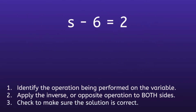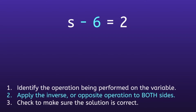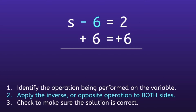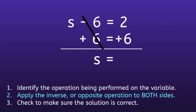Example Number 2: S minus 6 is equal to 2. We recognize our variable is S. Step 1: Identify the operation being performed on the variable. Looking at the side with the variable, the operation being performed is minus 6. Step 2: Apply the inverse or opposite operation to both sides. What is the opposite of subtracting 6? If you said adding 6, you are correct. On the left side, we have a negative 6 plus positive 6, and negative 6 plus 6 is equal to 0.